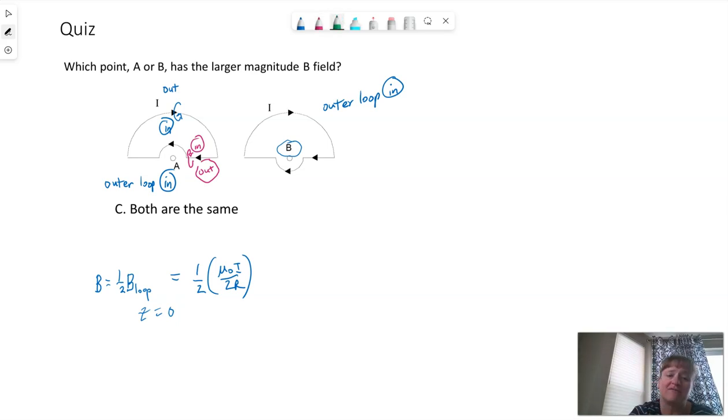What we do need to account for is the inner loop. The inner loop will be creating a magnetic field at point A and in point B.